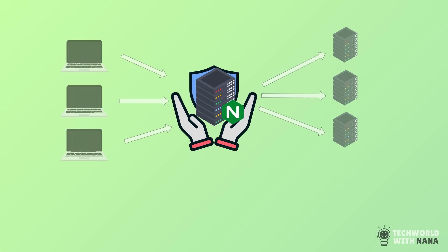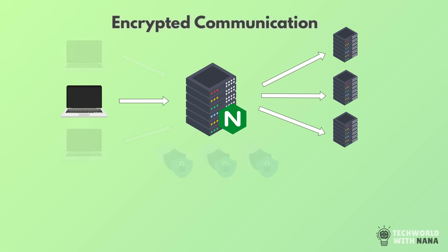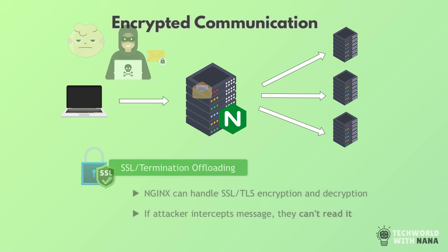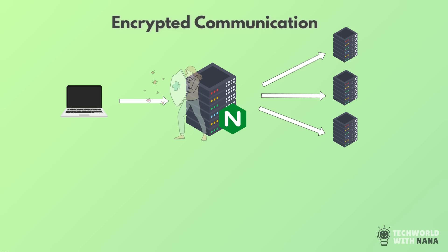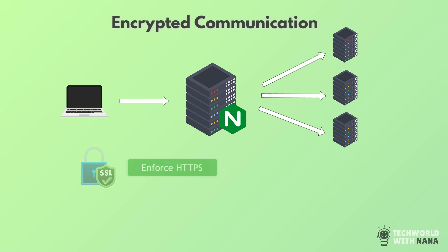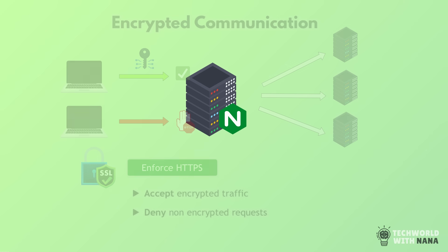Since we have one entry point, we can focus all our efforts on securing that one proxy server in all aspects. One important security measure is encrypted communication — the front-end sends an encrypted message to the proxy, meaning even if an attacker sees that traffic during transmission, they can't read it. Only the proxy server can decrypt it. For added security, in many systems the proxy passes that encrypted message on to the web servers, and the web server decrypts it itself, which is actually a better security practice. You can configure Nginx proxy to deny any requests that are not encrypted and only accept SSL-encrypted requests.